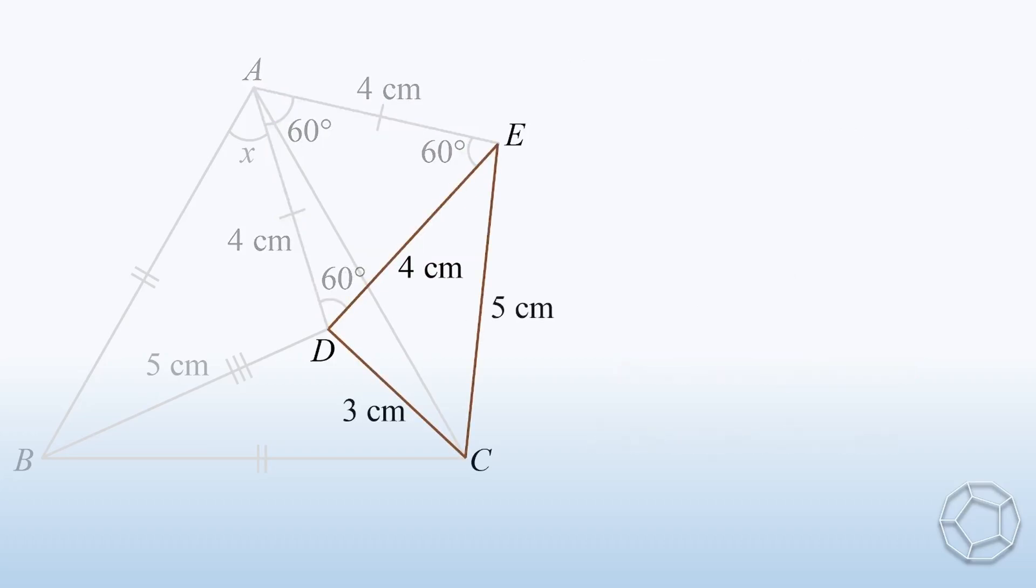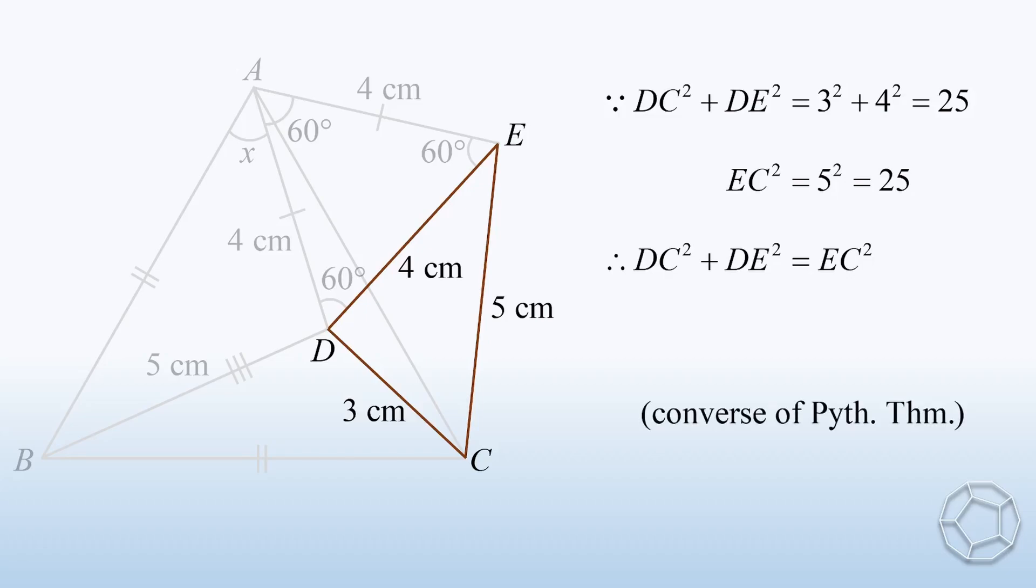Let's move on to the brown triangle. Do you see something special about the lengths of three sides? Because DC squared plus DE squared is equal to 25, which is equal to the longest side EC squared. By Converse of Pythagoras theorem, we can say that angle D is equal to 90 degrees.